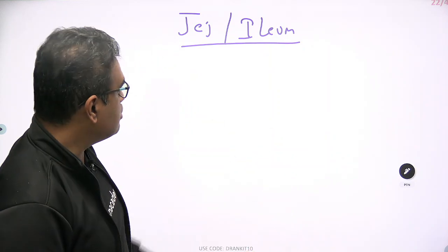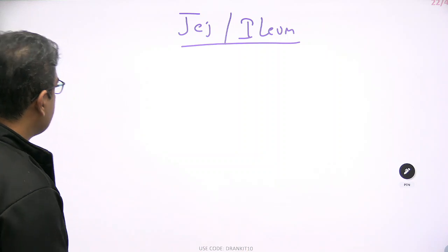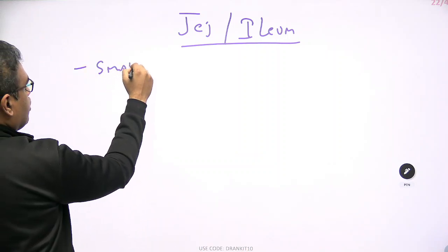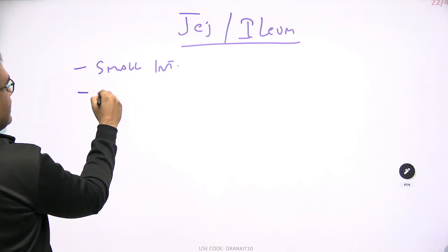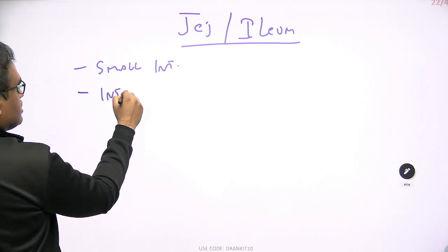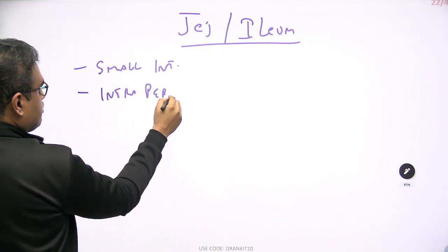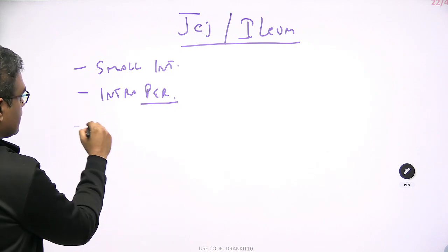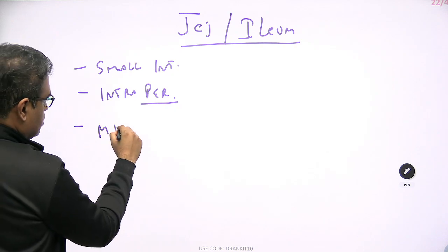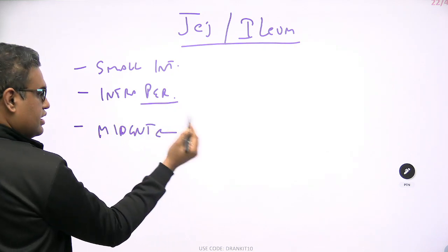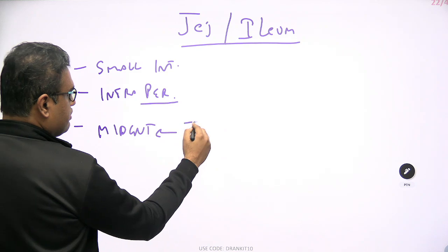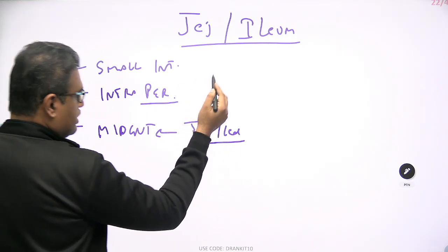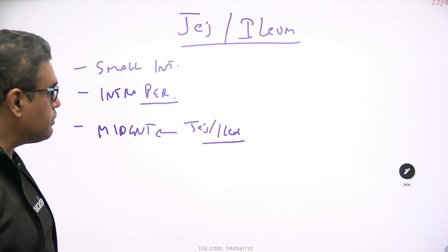First of all, these are part of the small intestine, as we all know. They are lying intraperitoneally, so they are highly mobile. They are part of the midgut, so they are supplied by the superior mesenteric vessels giving off their Jejunum and Ileum branches — we already covered the superior mesenteric vessels, you can have a look at that.